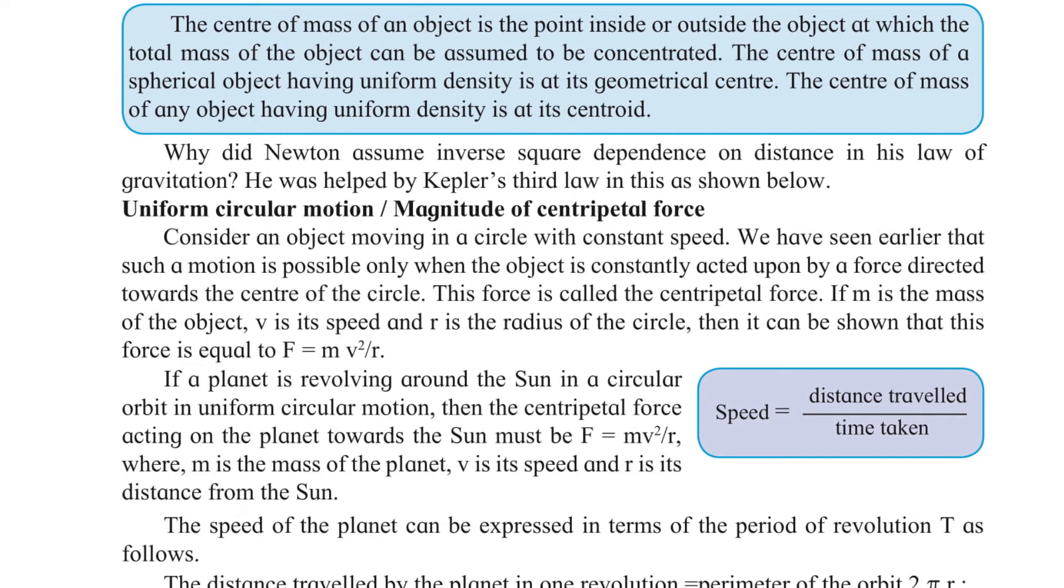The center of mass of an object is the point inside or outside the object at which the total mass of the object can be assumed to be concentrated. The center of mass of a spherical object having uniform density is at its geometrical center. The center of mass of any object having uniform density is at its centroid.